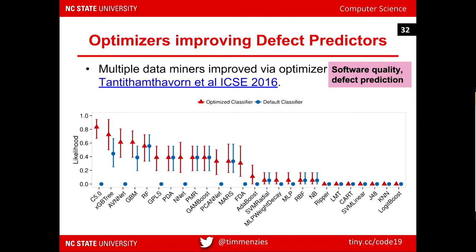The blue dots are performance of these learners before any optimization — before grid search fiddles with control parameters. Here you see C5 and neural networks with pre-tuning behavior near zero: absolutely terrible. Now look at behavior after tuning — see that red triangle? After tuning, the learner that looked absolutely terrible is now doing better than anything else. These top blue dots are some of the best results after tuning. Tuning is really important; we just have to handle the speed problem.